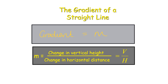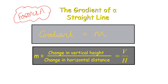We'll move on to some more complex ones later, but for the time being, here's the formula that's really important to get the beginnings of this topic. The gradient of a straight line is always represented by the letter M. It's the change in the vertical height and the change in the horizontal distance. So ultimately what we're looking at is the formula M equals V over H.